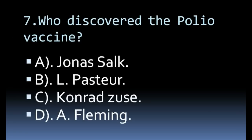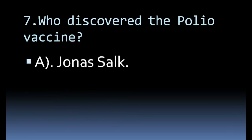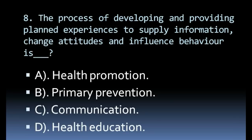Who discovered the polio vaccine? Options: Jonas Salk, Louis Pasteur, Conrad Seuss, Fleming. Correct answer: Jonas Salk.